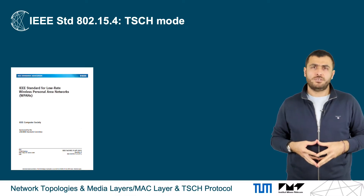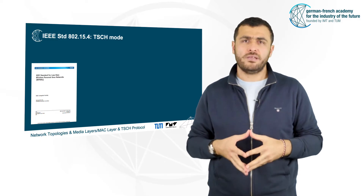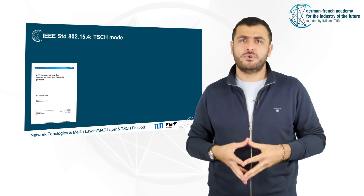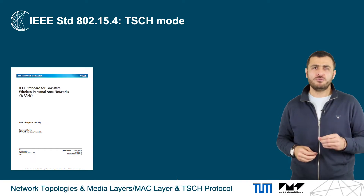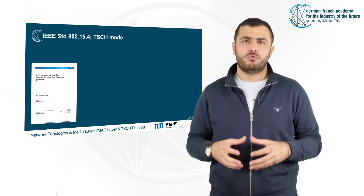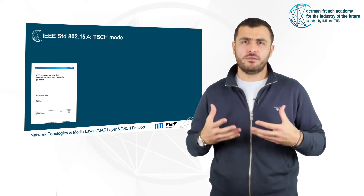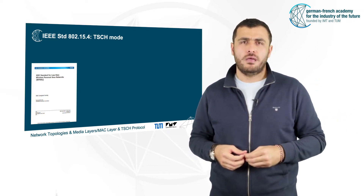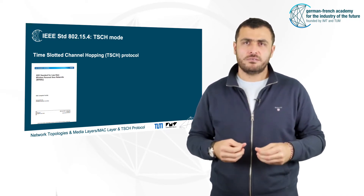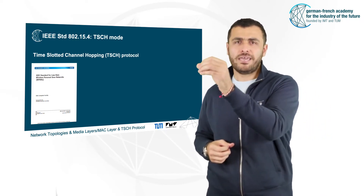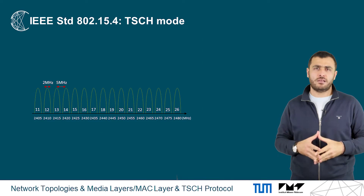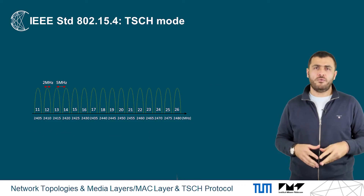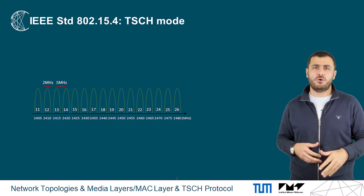Let us talk about TSCH now — a scheduled access method defined in IEEE 802.15.4. In 2016, the IEEE 802.15.4-2015 standard was published to offer a certain level of quality of service for industrial applications. Among the operating modes defined in the standard, Time-Slotted Channel Hopping, TSCH, was introduced. TSCH comes with 16 radio channels operating at 2.4 GHz, each with a bandwidth of 2 MHz and a channel separation of 5 MHz.